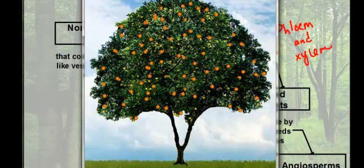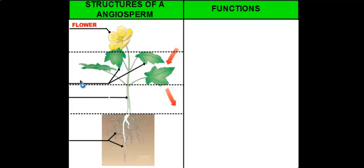So let's take a look at angiosperms, their structures, and their functions. Angiosperms can have four main structures. The top structure everybody probably knows is called a flower. Next, we have these large, flat, green structures called leaves. These leaves are attached to a long stalk that supports the plant called a stem. And lastly, the parts that we don't see are buried underground — these are the roots of the plant. Each structure here has a different job and different function to it.